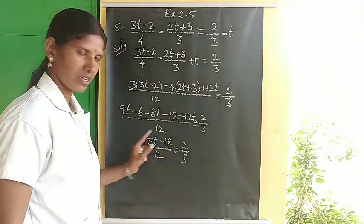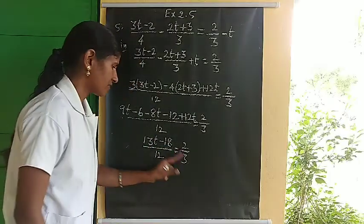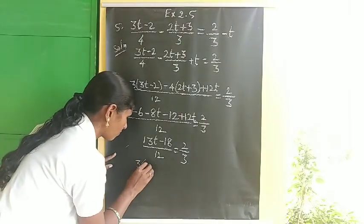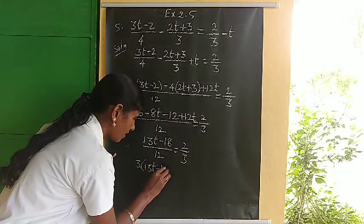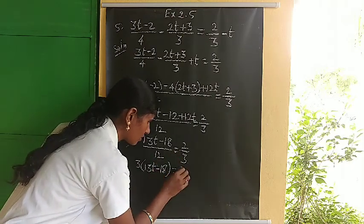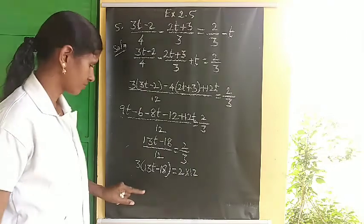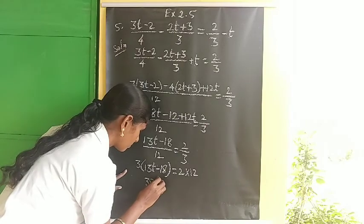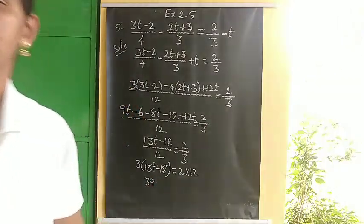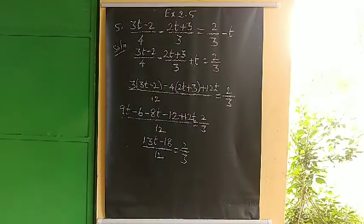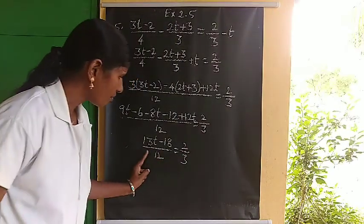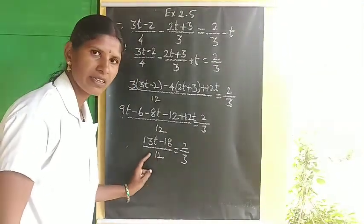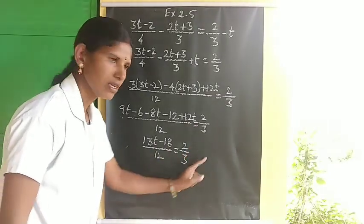Multiply both sides by 12: the 12 on the left cancels, giving 13t minus 18 equals 2 by 3 into 12. Simplifying the right side: 4 threes are 12, and 2 fours are 8. So we get 13t minus 18 equals 8.